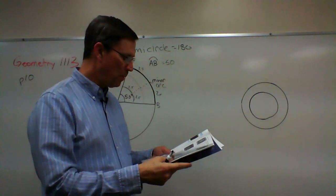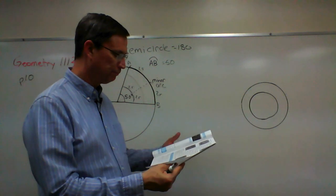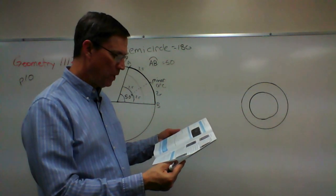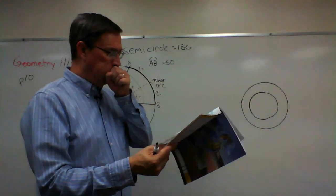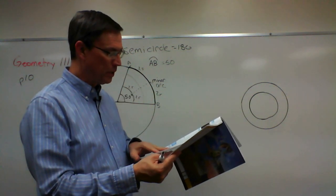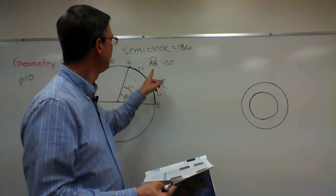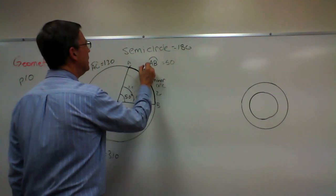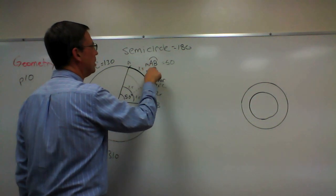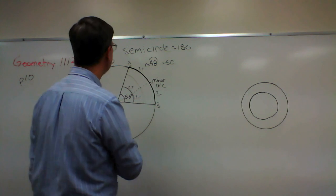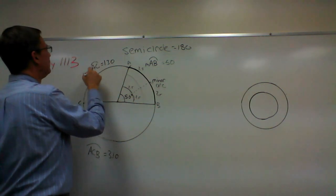I would encourage you to read through page 10, study the examples there at the bottom, and remember when they put an M in front of it, that's what I should have done—that means the measure of arc AB, and then we give it a number. Over here, the measure of AC is 130.